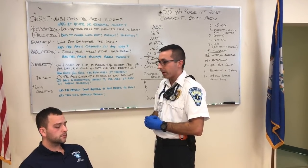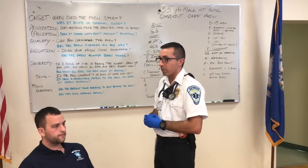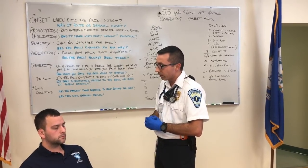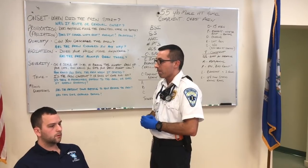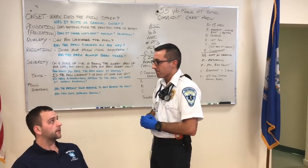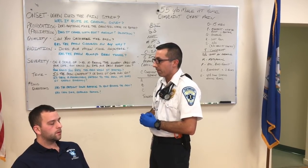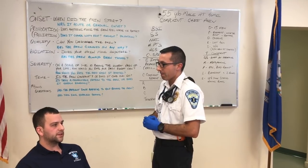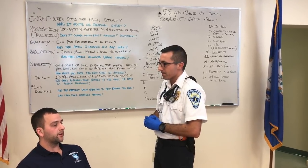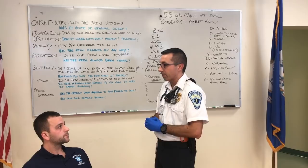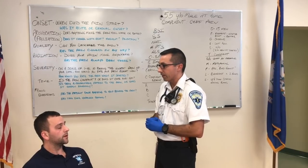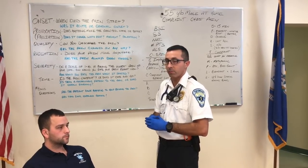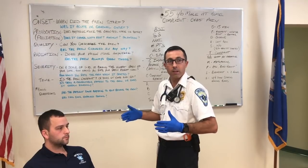Severity: on a scale of 1 to 10, with 1 being little to no pain and 10 being the worst pain of your life, what is your pain right now? It's 10 out of 10. What was it when it started? About 8 out of 10. So it started at 8 and is now at 10 — progressively worsening.